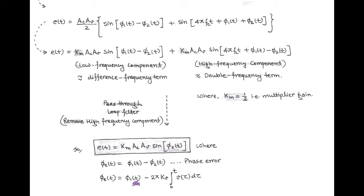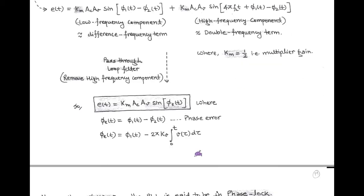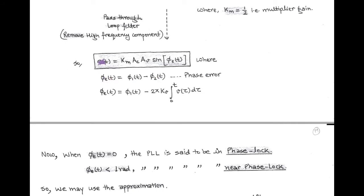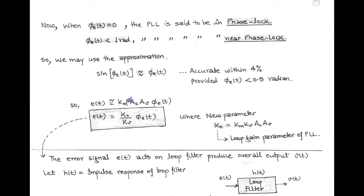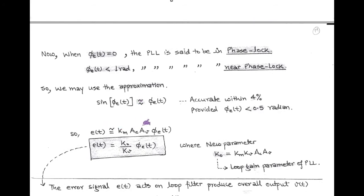In place of φ2, we write 2π·kV·∫V(τ)dτ. When the phase error angle φ_E equals 0 radians, the PLL is said to be phase locked. When φ_E is less than 1 radian, the PLL is in near phase lock. Under this approximation, sin(φ_E) ≈ φ_E, which is accurate within 4% provided the error angle is less than 0.5 radian.